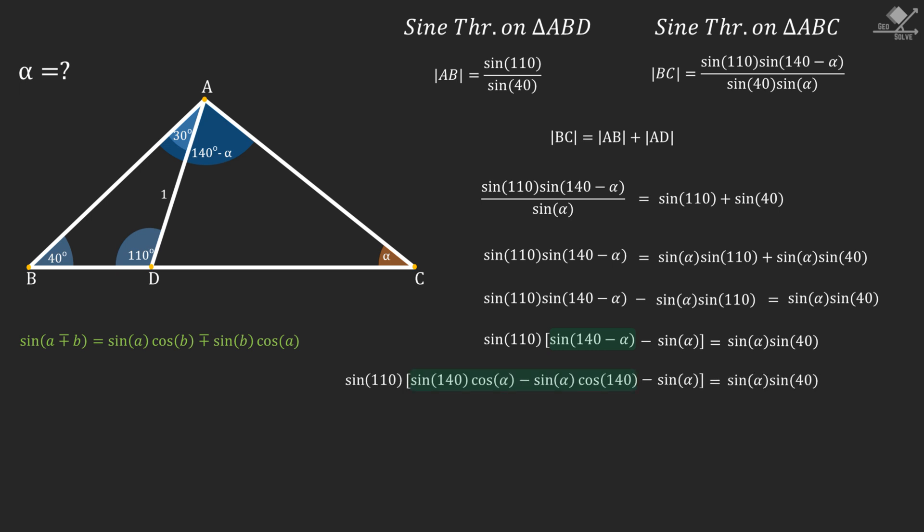Now remember that sine of 180 minus A is sine A, and cosine of 180 minus A is minus cosine A. So let's use these identities for the green shaded terms. Now our equation will be in this form. And now we can again use the first identity to simplify this shaded term.